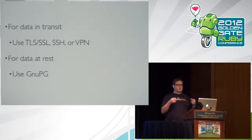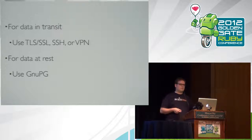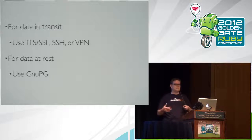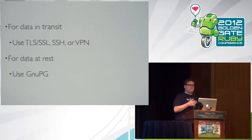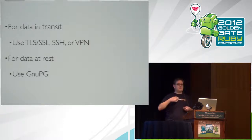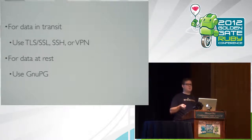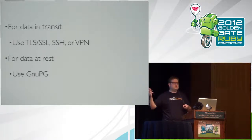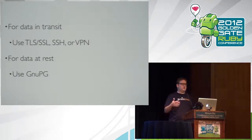Some really good general prescriptive advice: if you have data going in transit over a network, use TLS and SSL — TLS stands for Transport Layer Security, it's the successor to SSL — or SSH, or VPN. If you have data at rest, sitting on disk, in Dropbox, or S3, use GPG. If it doesn't fit one of these two models, try to rework it until it does. These two methods are really well understood ways to secure your data.